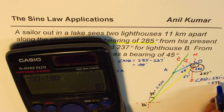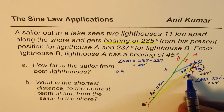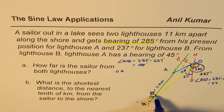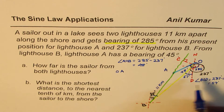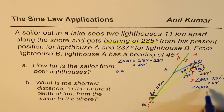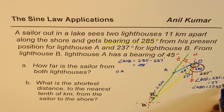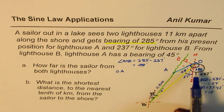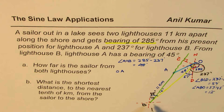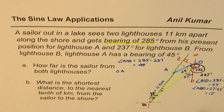So this angle BOD is 57 degrees. By alternate interior angles with the parallel east-west lines, this corresponding angle at B is also 57 degrees. Therefore, angle ABO equals 57 minus 45 degrees, which is 12 degrees. So we get this angle as 12 degrees. Use these parallel lines and alternate angles to figure it out.